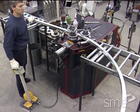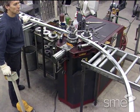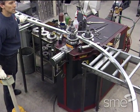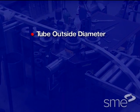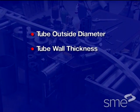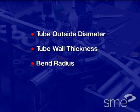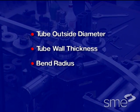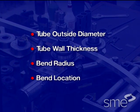Factors important to the successful bending of tubes include tube outside diameter, tube wall thickness, bend radius, and bend location.